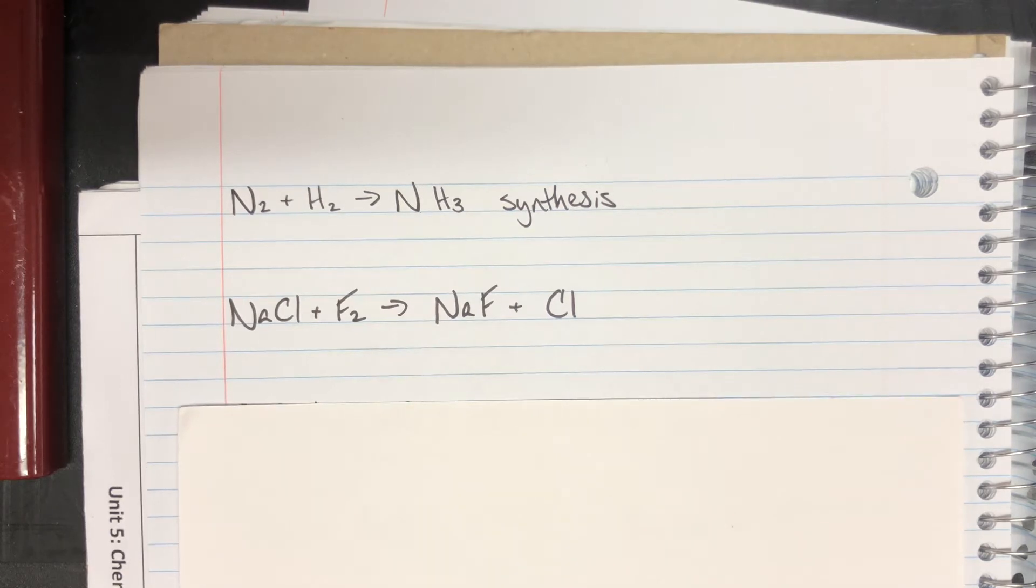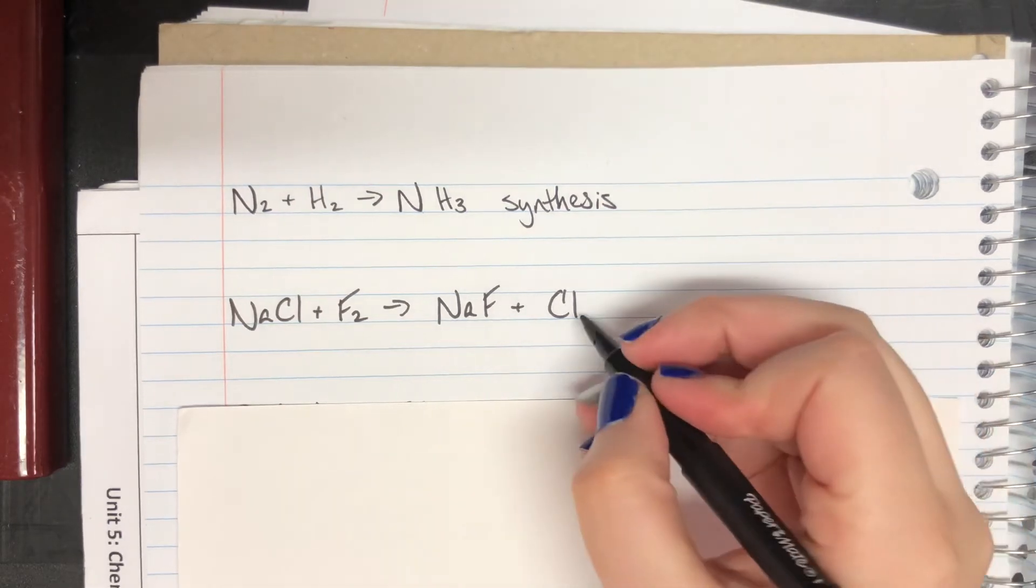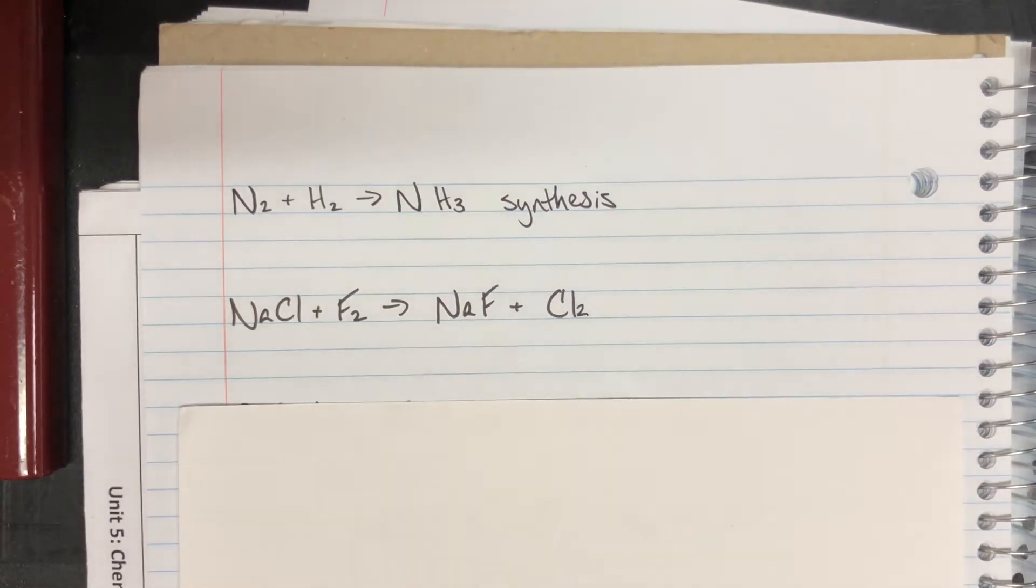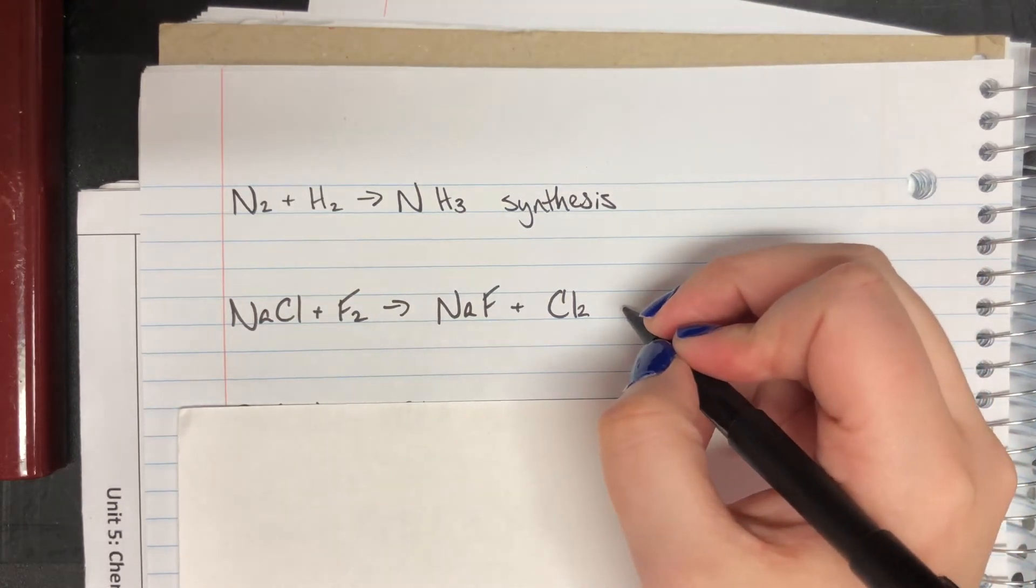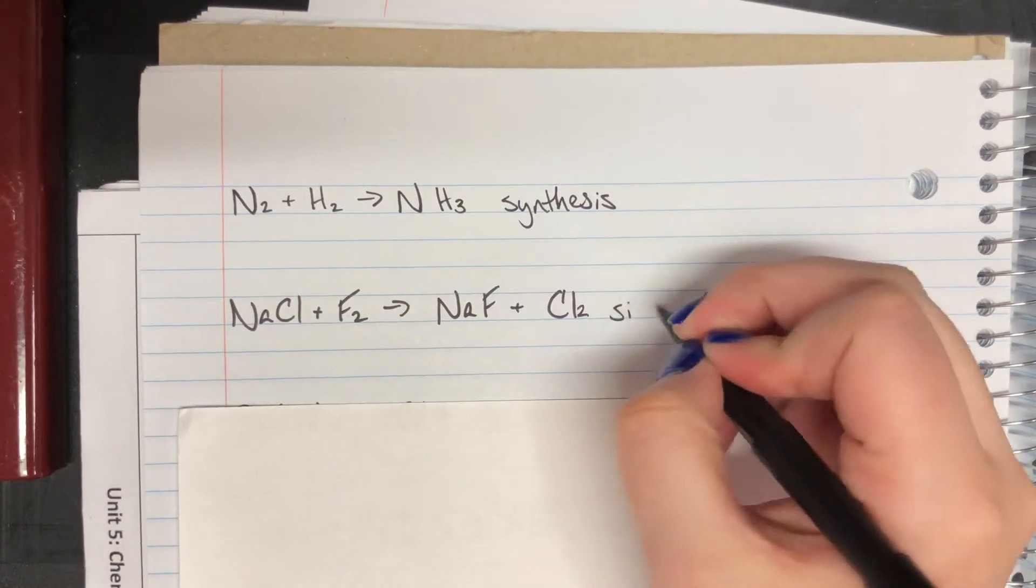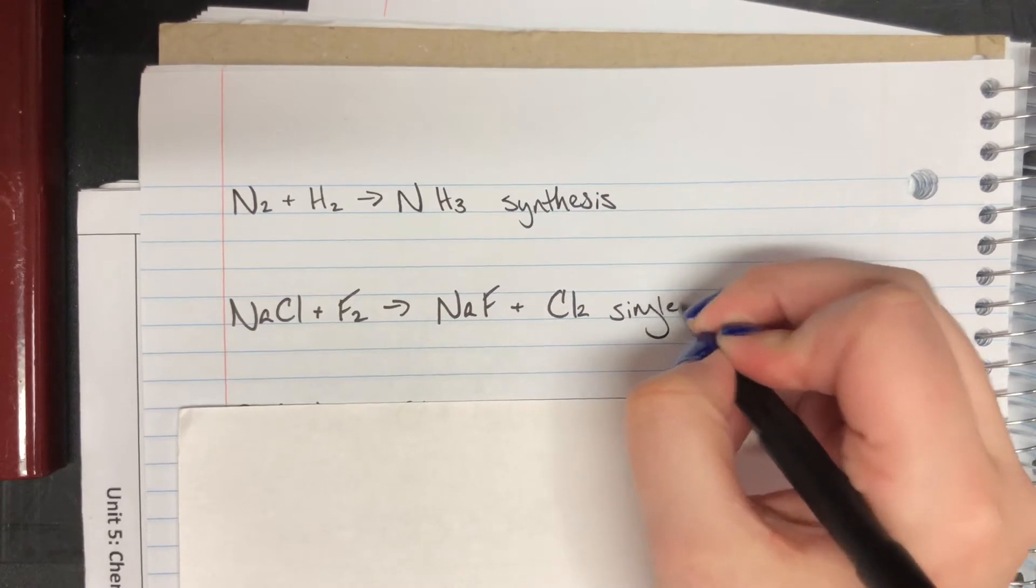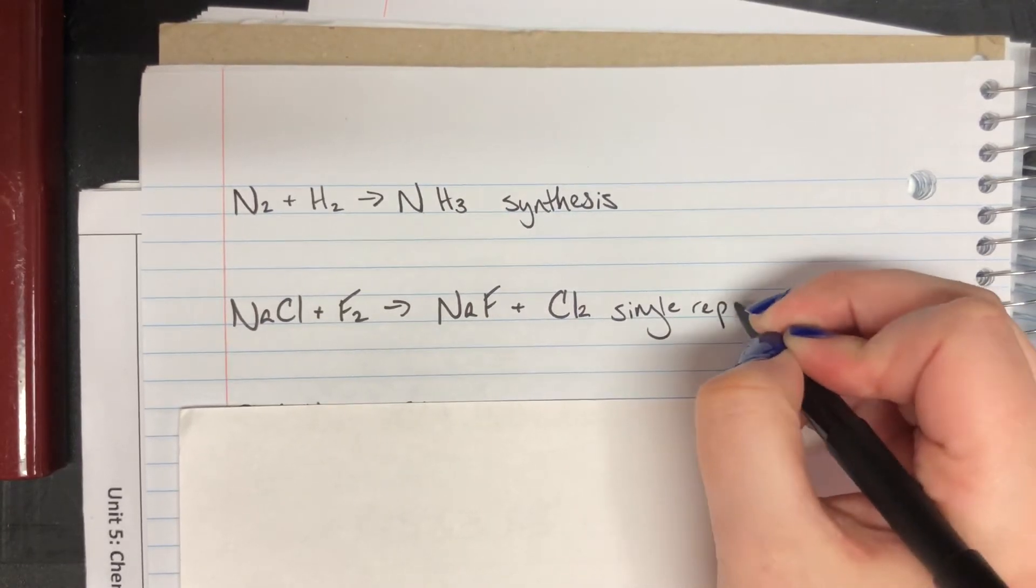Next, I have sodium chloride plus diatomic fluorine going to sodium fluoride plus chlorine, which should have been diatomic. And as we are looking at this here, I see a couple plus a single going to a couple plus a single. And I see that chlorine and fluorine have switched places. So this is going to be my homewrecker type, which is going to be my single replacement reaction.